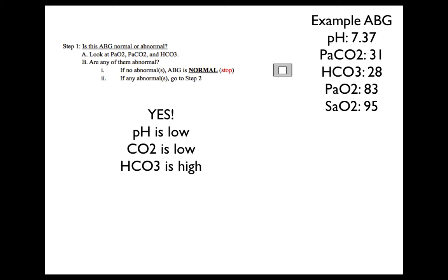When looking at the six-step interpretation process, we'll use the same example ABG for all six steps. Step one: is this ABG normal or abnormal? Look at the O2, CO2, and bicarb. Are any of them abnormal? In this example, yes. The pH is low — it's less than 7.4. 7.4 will be our home base for all pH in ABG interpretation. Anything within 7.35 to 7.45 is technically normal, but we'll look at how it deviates from 7.4. So 7.37 is low. The carbon dioxide is low at 31, and the bicarb is high at 28.